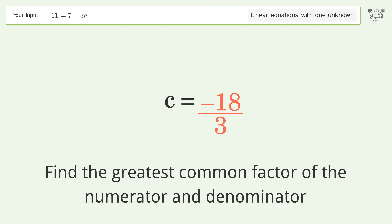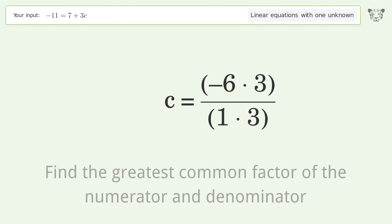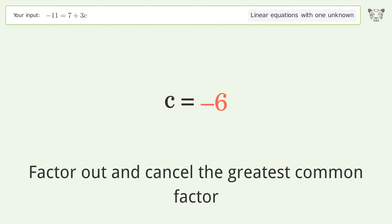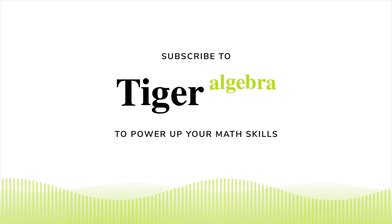Find the greatest common factor of the numerator and denominator. Factor out and cancel the greatest common factor. And so the final result is c equals negative 6.